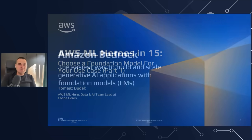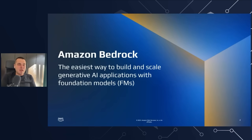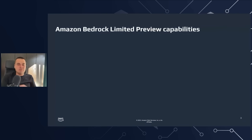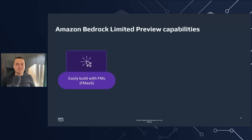The simplest way to build a generative AI-powered application in AWS is to use Amazon Bedrock. Amazon Bedrock is not a model but rather a foundation model as a service — a service that essentially lets you access a variety of different models through its API.